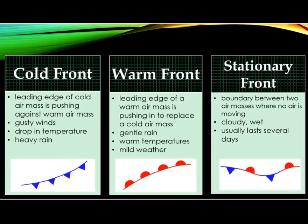A cold front is the leading edge of a cold air mass that is pushing against the warm air mass. It typically brings gusty winds, drops in temperature, and heavy rains. A warm front occurs when the leading edge of a warm air mass is pushing in to replace a cold air mass. It typically brings gentle rains, warm temperatures, and milder weather.